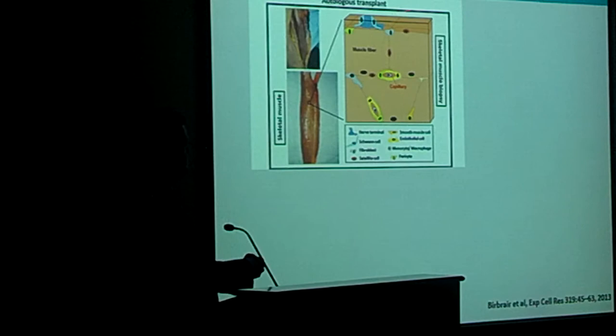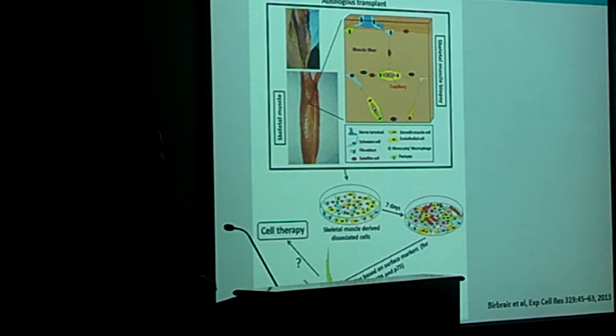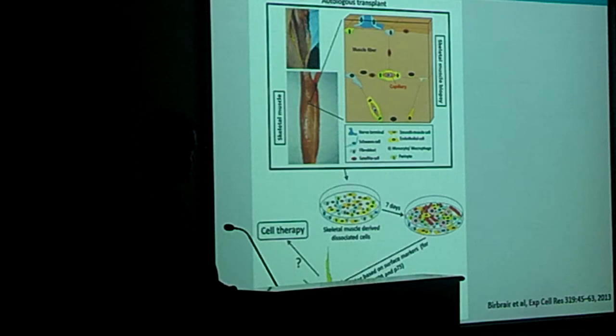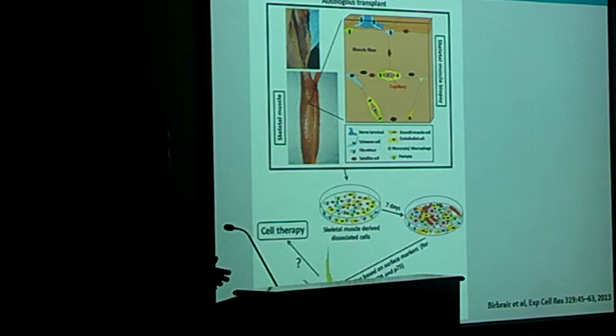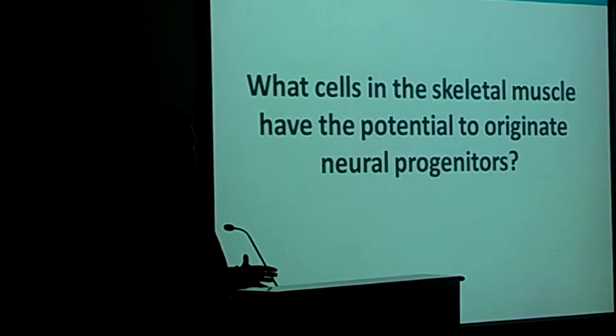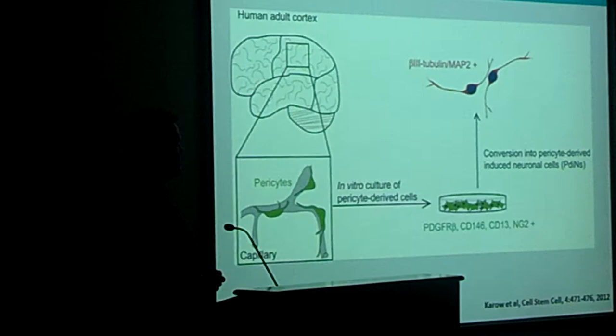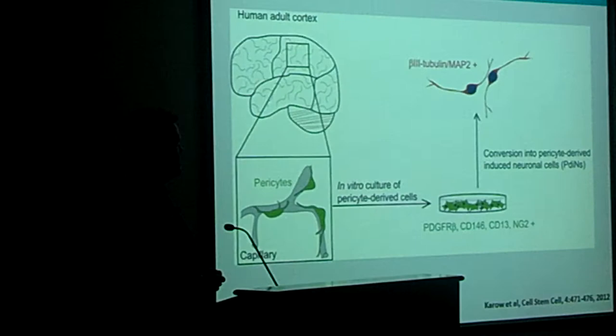Based on our findings, we decided that we can collect a skeletal muscle biopsy, culture the cells under optimized conditions, and by sorting based on surface markers, isolate pure neural progenitors for cell therapy approaches, which we are currently testing in our lab. However, those neural progenitors are not present in the intact skeletal muscle — they are formed after culture. So our next question was: what cells in the skeletal muscle have the potential to originate those neural progenitors after culture? As pericytes in the central nervous system can be induced to differentiate into the neural lineage, we hypothesized that pericytes from skeletal muscle also could have this potential.